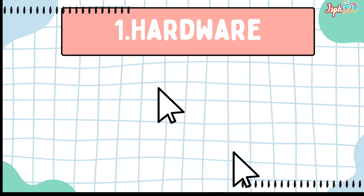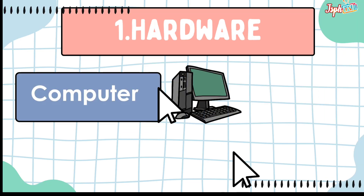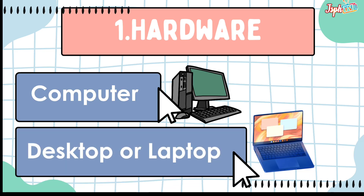First, hardware. These are examples of hardware. First, we have the computer — the primary device used for writing code, running programs, and testing software. Second, the desktop or laptop, depending on preference and requirements.